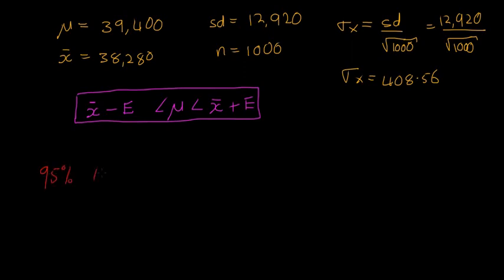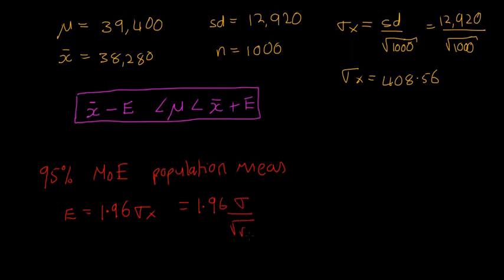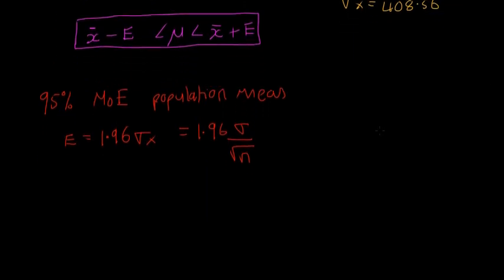95%, I'm just going to say MOE, which means margin of error. For population mean, E is equal to 1.96 times our sample standard deviation, sigma x. So another way of saying that is 1.96 times sigma over the square root of n. So now we can stick all of those into our formula, and we'll see if the income level has changed in the country.